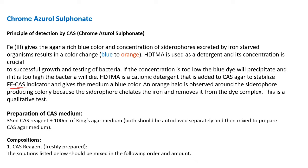When iron is bound to the CAS indicator, it produces a blue color. When bacteria grow on the medium and secrete siderophores, the iron separates from the CAS indicator, turning it orange. An orange halo is observed around siderophore-producing colonies because the siderophore chelates the iron and removes it from the dye complex. This is a qualitative test.